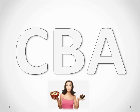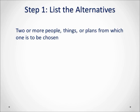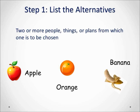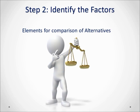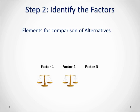CBA focuses stakeholders on the importance and differentiation of each alternative's advantages, and provides a streamlined, systematic, and repeatable system for making and documenting decisions. Decisions that are durable do not have to be reworked, which saves time and money in the long run. The first step is to identify alternatives — people, things, or plans from which one option is to be chosen. For our example we will use an apple, an orange, and a banana as alternatives for a post-workout snack. Step two is to identify the factors we will use to differentiate the alternatives. A factor is an element or part of a decision containing criteria required for making a decision.